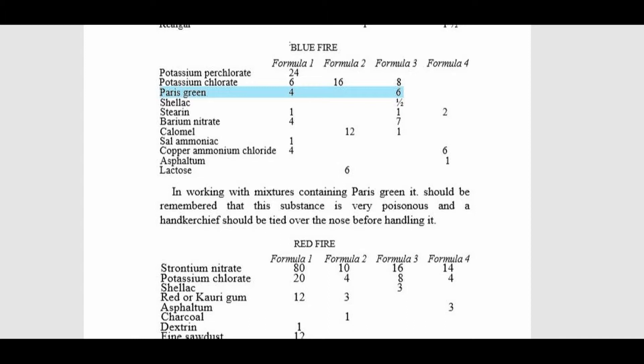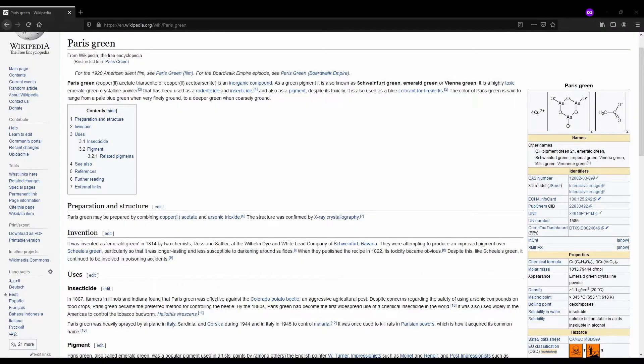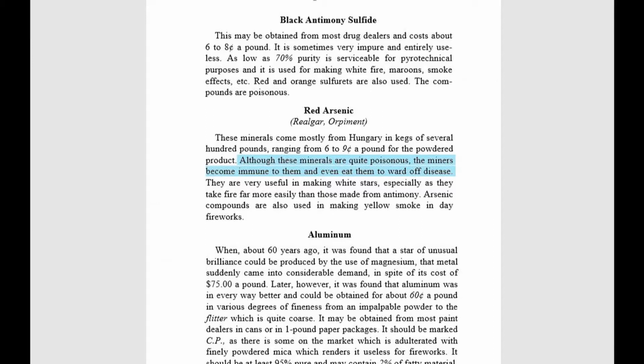Back in the early days of pyrotechnics, people were more than willing to poison themselves in search of a good blue. I remember coming across this table in Weingart's book as a teenager and asking my dad if we had any Paris green laying around. Fortunately, we did not. Paris green is copper aceto-arsenite, as in a double salt of copper acetate and arsenic trioxide. It was used as a pigment by artists for many years, but it got its name from being used as a rat poison in the Paris sewers. Arsenic is crazy toxic, unless, according to Weingart, you are a Hungarian miner who has developed immunity and you eat rialgur to ward off disease.